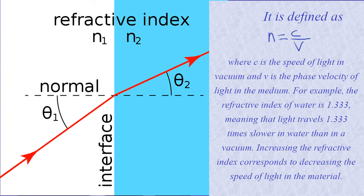For example, the refractive index of water is 1.333, meaning that light travels 1.333 times slower in water than in a vacuum. Increasing the refractive index corresponds to decreasing the speed of light in the material.